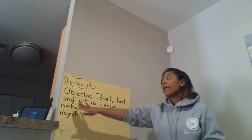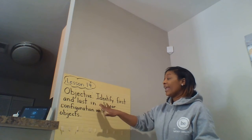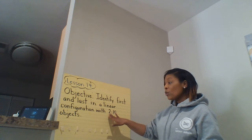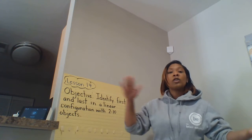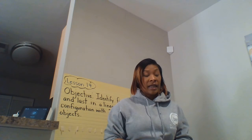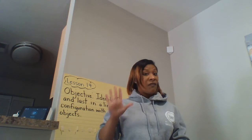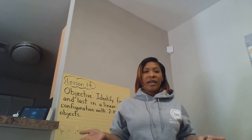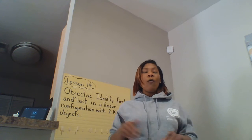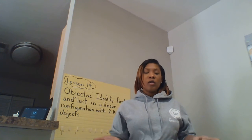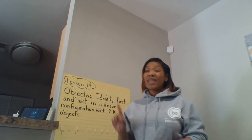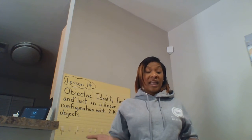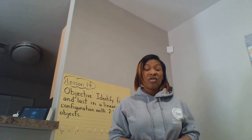Identify first and last in a linear configuration with two to ten objects. So if you remember in lesson 13, we used two to five objects and our objects were scattered, which meant they weren't in a line — we just had them all over the paper or all over your table. Well, this time our objects or our dots are going to be linear, which means they're going to be in a straight line.